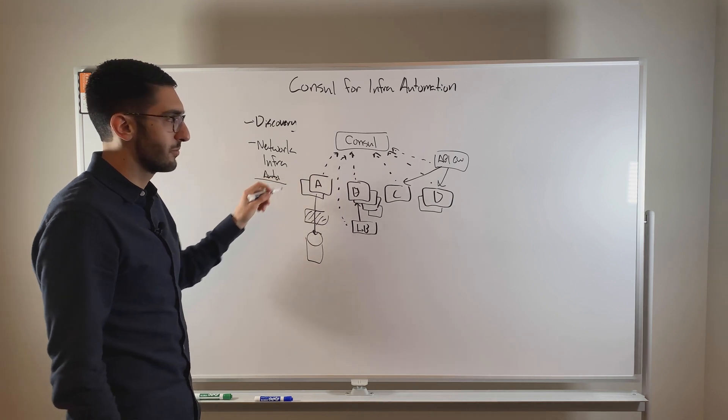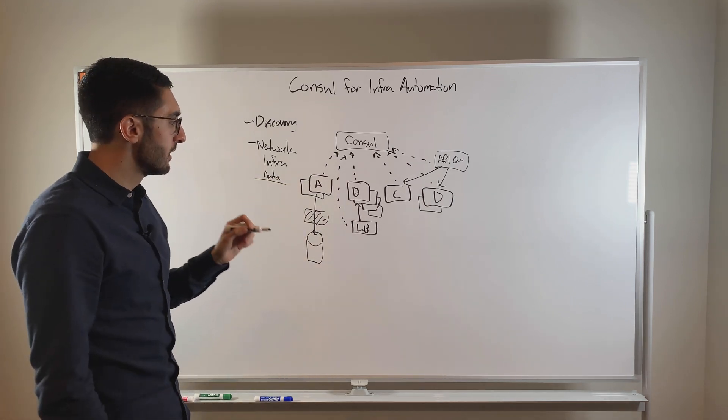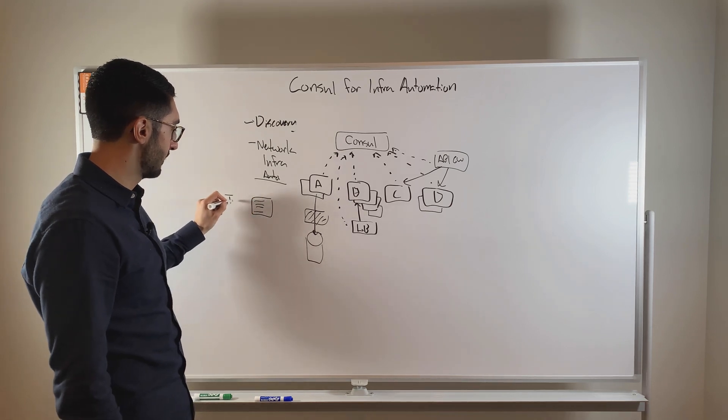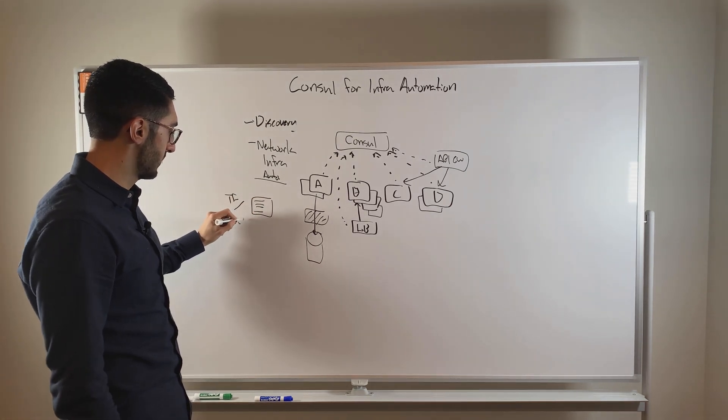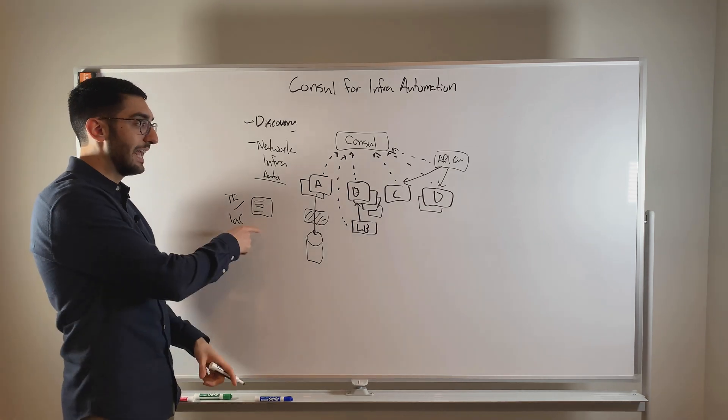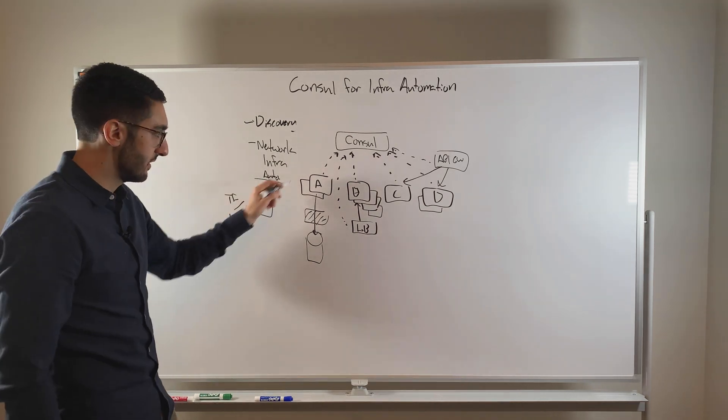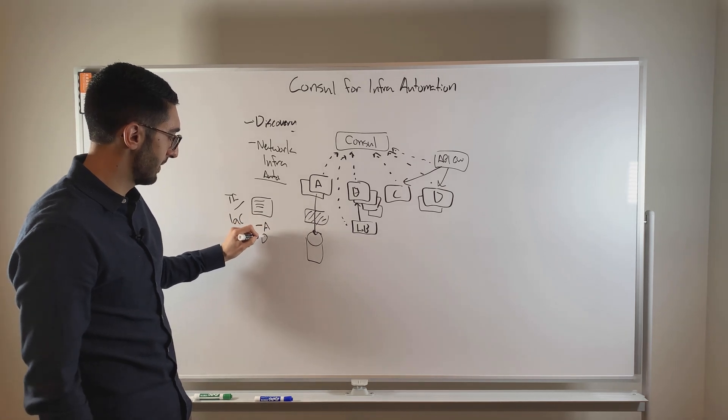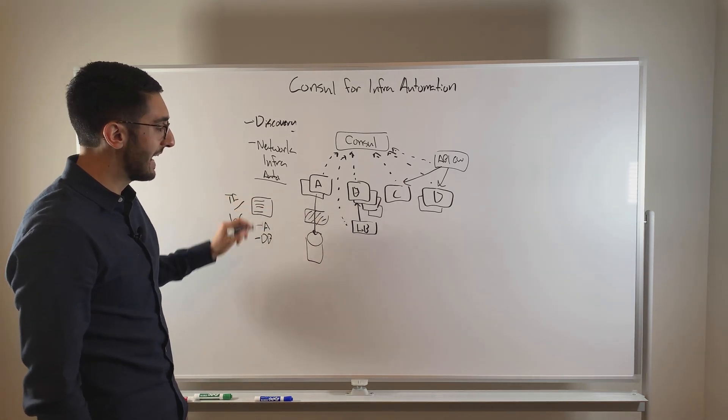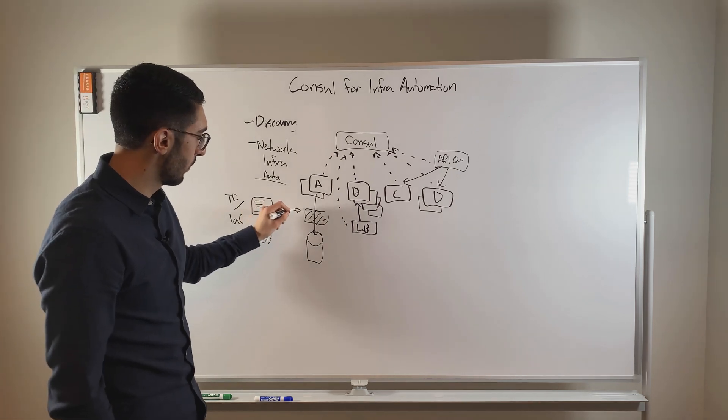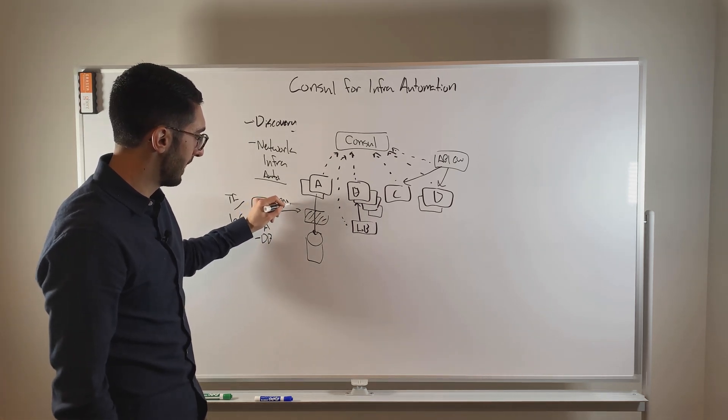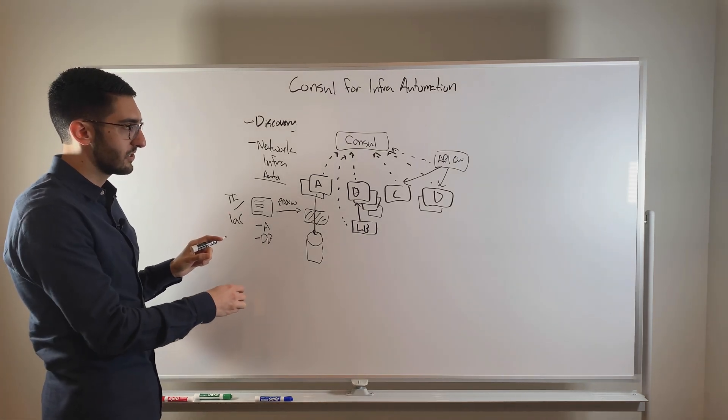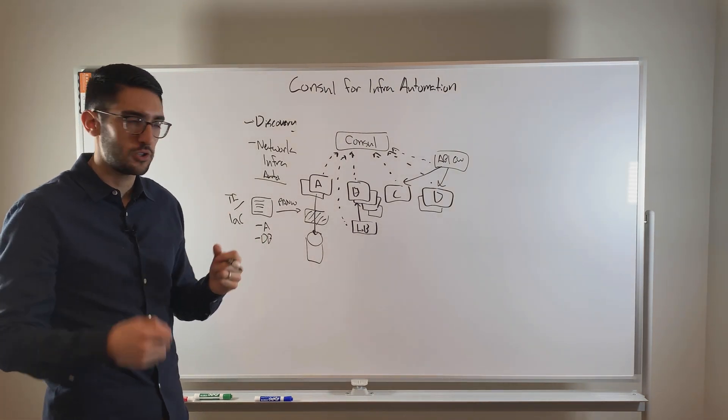And so in this use case, what we do is we actually leverage Terraform. So what we do is we author a snippet of Terraform configuration. This is Terraform, it's infrastructure as code. And what we have is as our input, it's the set of service A, so our input is service A as well as the set of database nodes. And then we're going to configure as part of our Terraform, what are the rules, for example, to configure our Palo Alto firewall.